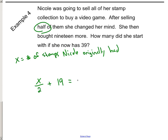So, she's now got thirty-nine after selling half of her collection, which is represented here. And then she bought nineteen more on top of that half collection. And she's got thirty-nine. And we're free to go solve now.